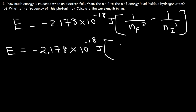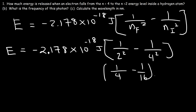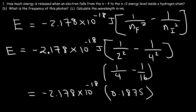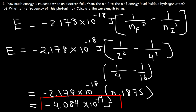n_final is 2 and n_initial is 4. So 1/2² = 1/4 and 1/4² = 1/16. We get 1/4 − 1/16 = 3/16, which equals 0.1875 as a decimal. Multiplying by −2.178 × 10⁻¹⁸, you should get −4.084 × 10⁻¹⁹ joules. That's how much energy is released when an electron falls from the fourth to the second energy level.